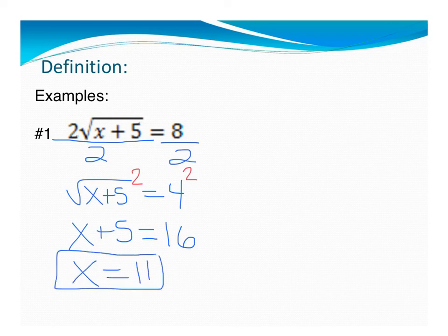So here's my answer. If I've got to double check, make sure it's all good. Well, if I plug 11 in here, is my radical positive? Yes, it's 16. The square root of 16 is 4. 2 times 4 is 8. It totally works.